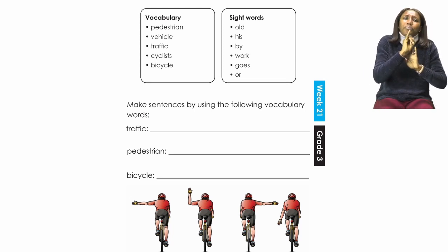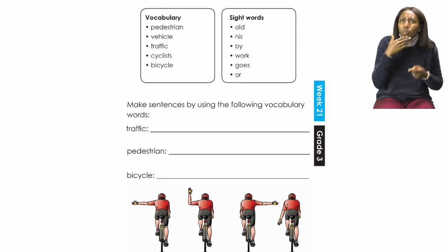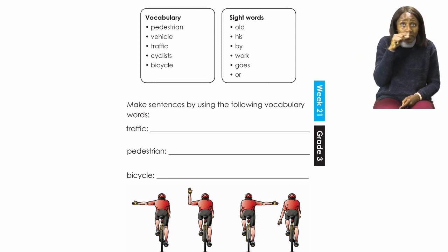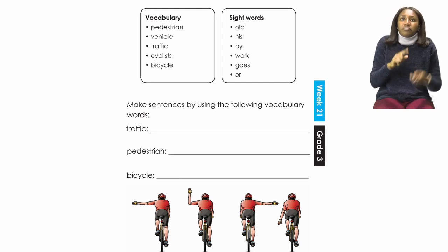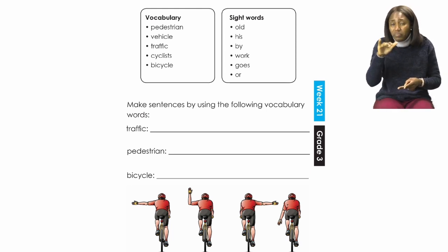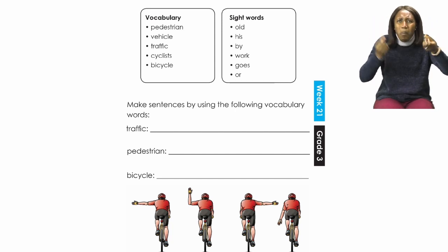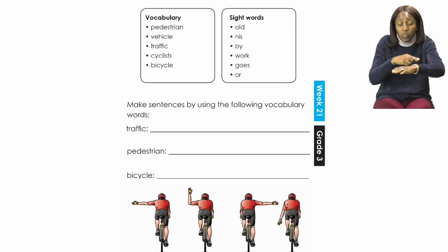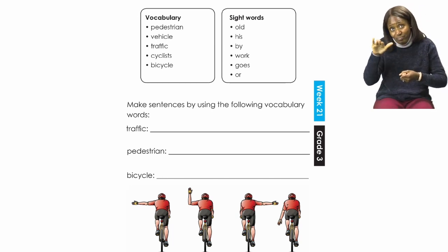A pedestrian is someone who travels by foot — they are walking from one place to another. A vehicle can be anything like a bus, a car, or a truck. Anything that travels on the road is a vehicle, except for a bicycle.